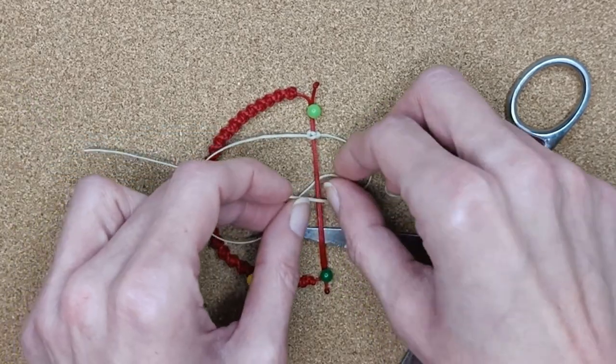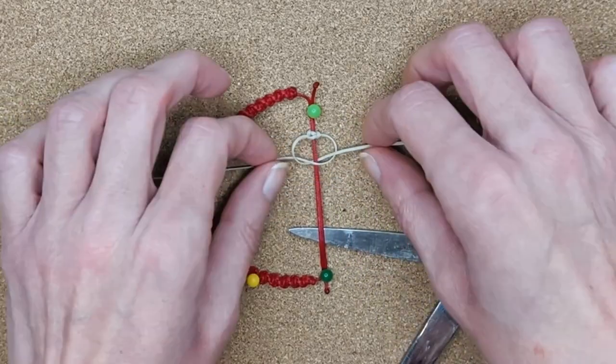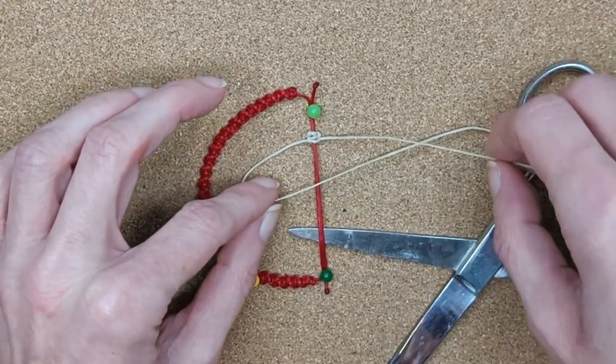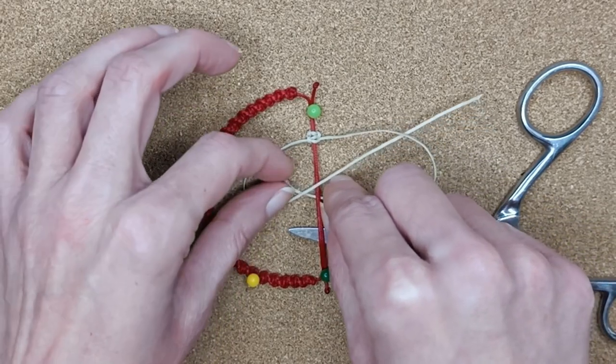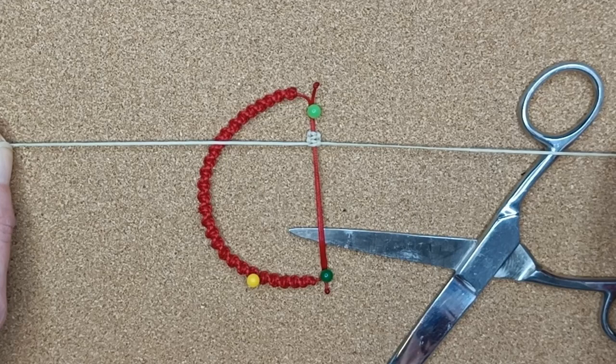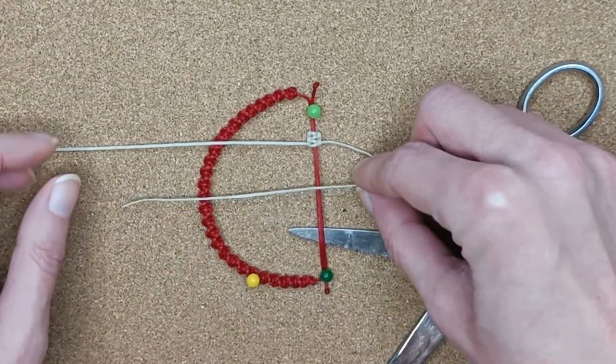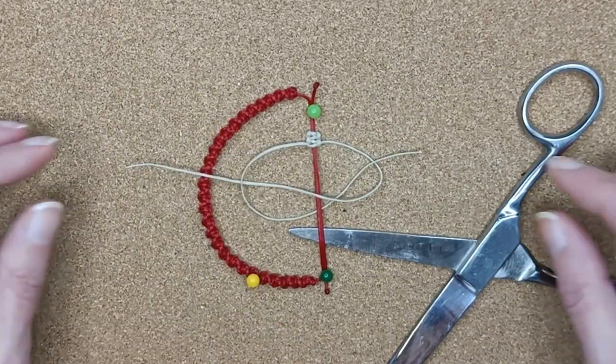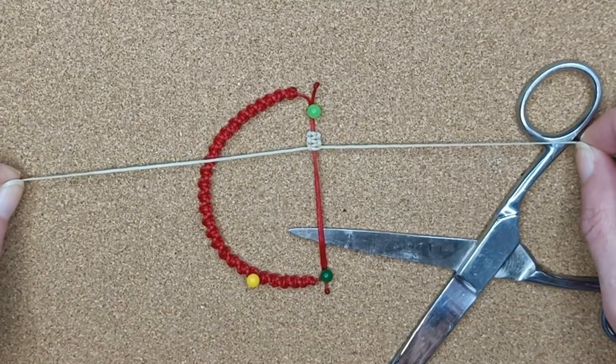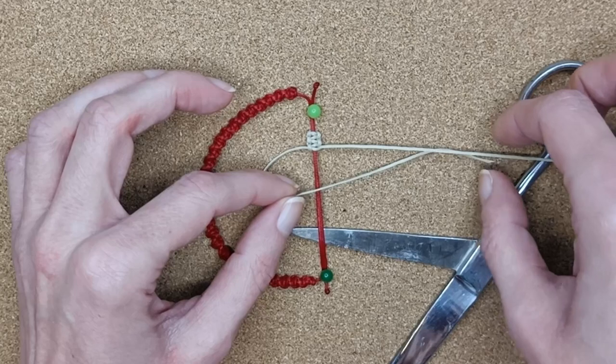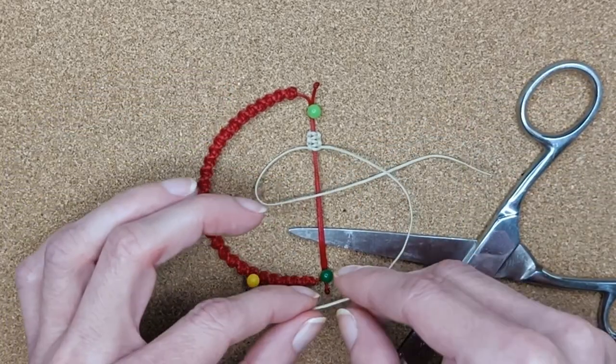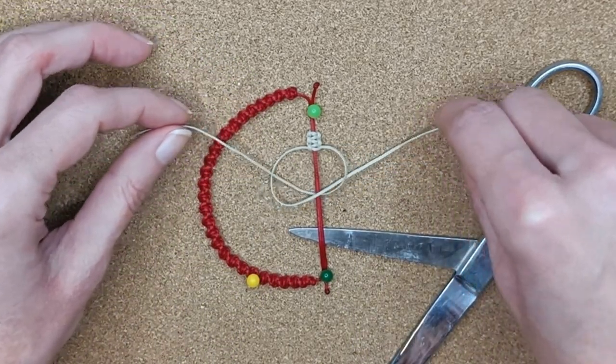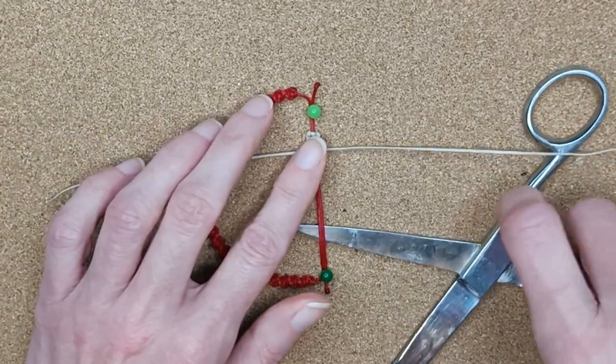To complete the closure, you will repeat the process two more times. Now you have your 3 square knots.